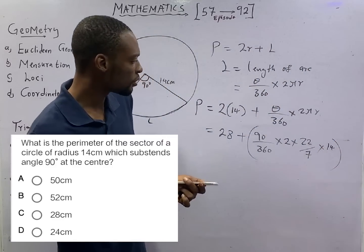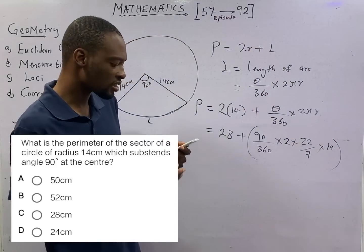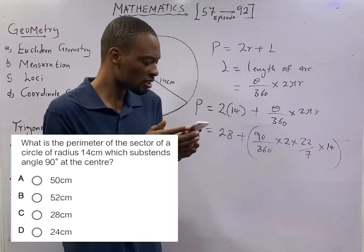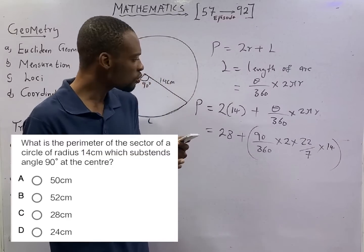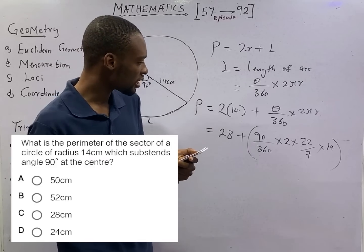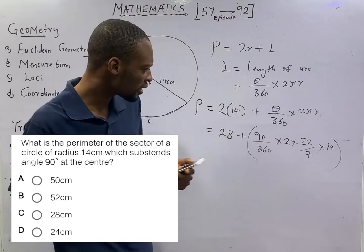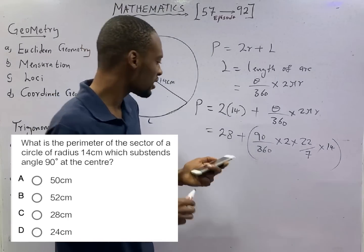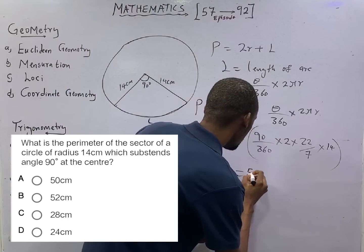So 28 plus 90 over 360 times 2 times 22 over 7 times 14. That would be the answer. And ladies and gentlemen, to your biggest surprise, the answer is 50 cm.